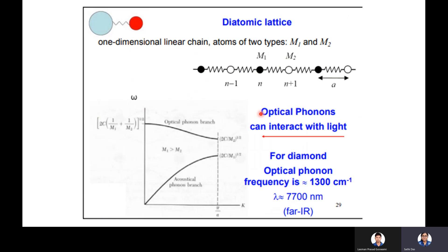In the next lecture, we shall consider the diatomic lattice with two different atoms of masses M₁ and M₂, and find the corresponding dispersion relation. We will then discuss the optical phonon branch and the acoustical phonon branch.